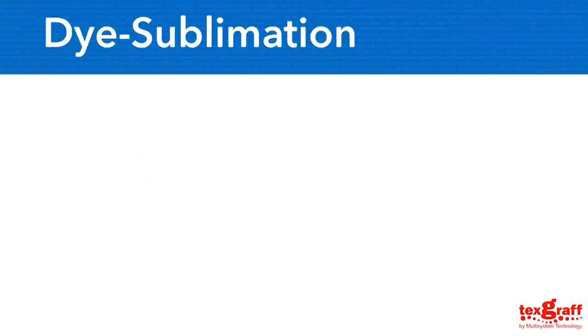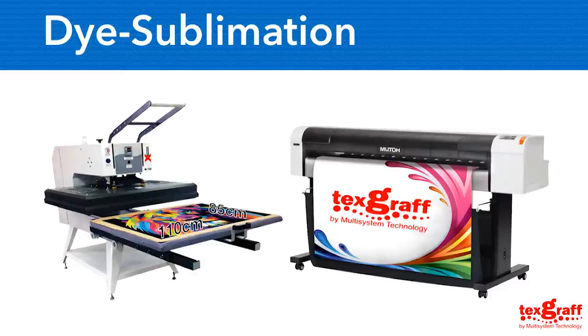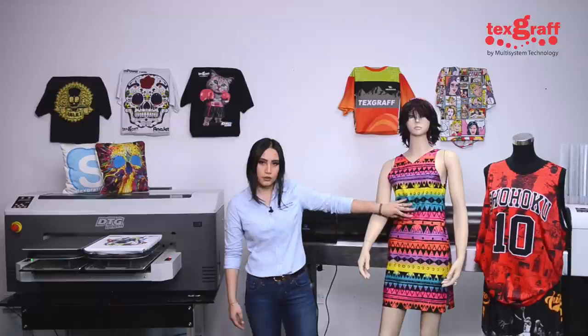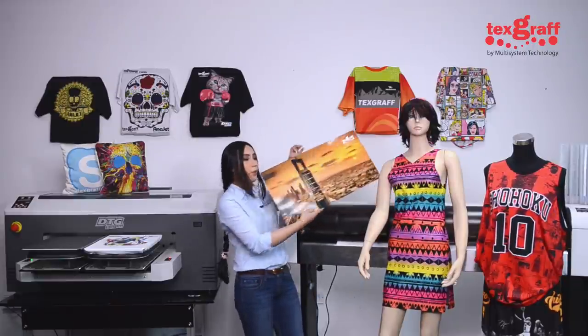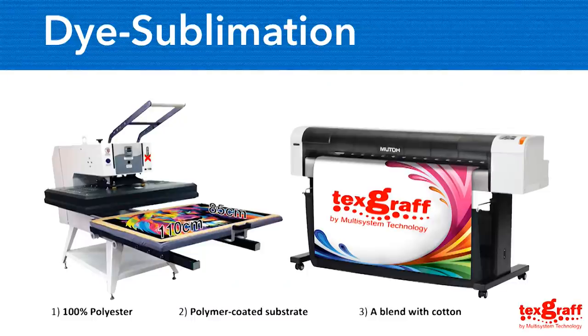Proceeding to dye sublimation: dye sublimation printing is also a digital printing technology that uses full color artwork, working with polyester and polymer-coated substrates. In this method, you need to print on transfer paper, then sublimate the inks from the transfer paper to the fabric — basically a two-step process. The material ideally used is white 100% polyester or a blend with cotton, such as those used in sportswear or fashion. You could also print on polymer-coated hard surfaces. Dye sublimation uses CMYK dye sublimation inks that can print on white and light colored textiles.